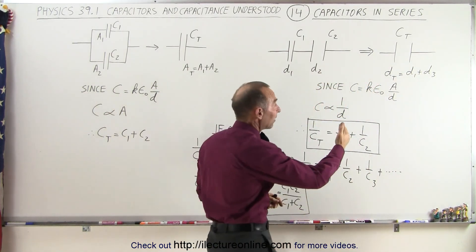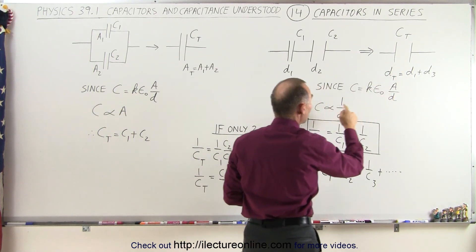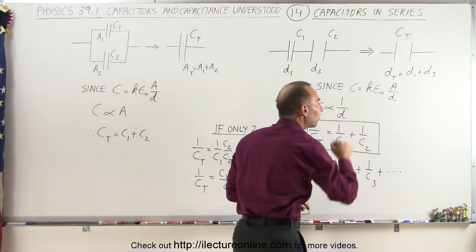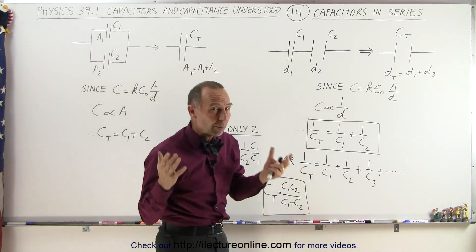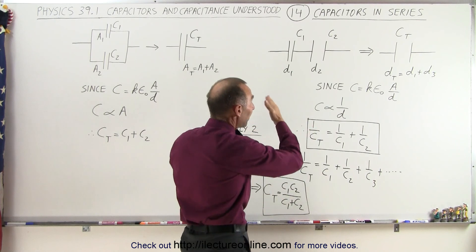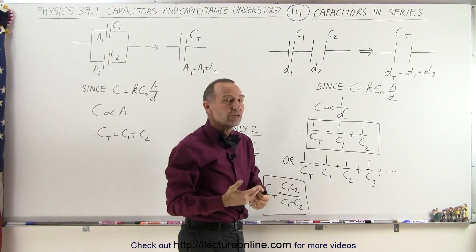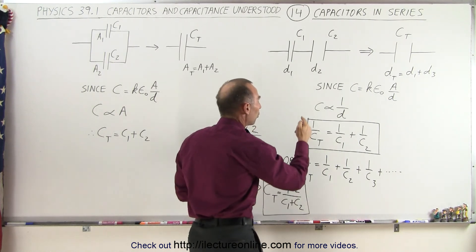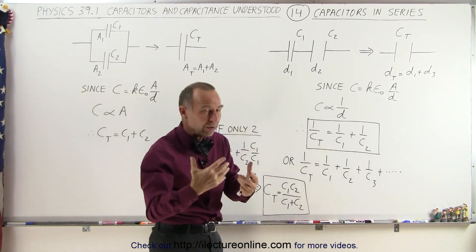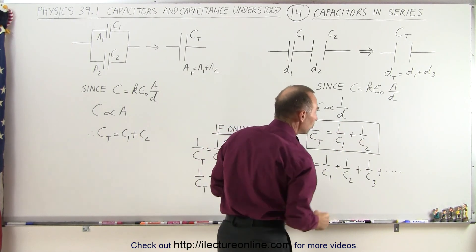Since the capacitance is equal to k times epsilon sub-naught times A over d, we can see that the capacitance is proportional to the inverse of the distance. So therefore, when we want to add capacitors in series, we have to add the inverse of the capacitance. So 1 over C total, or 1 over C equivalent, is equal to 1 over C1 plus 1 over C2.